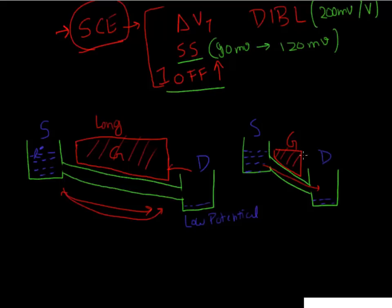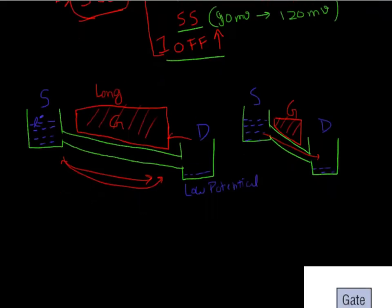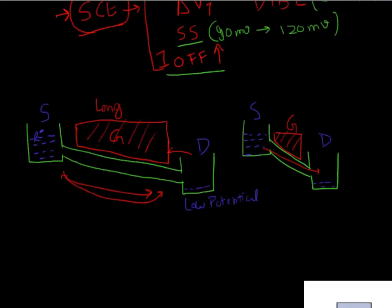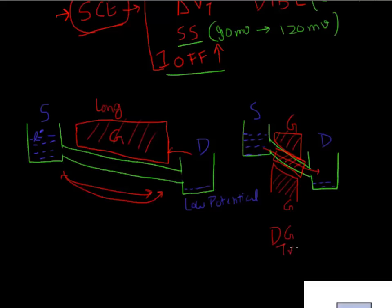Using this analogy, we can simply think about how to improve or cut off this leakage, or improve the gate control. What we need to do is essentially put another nozzle — maybe use two nozzles, or use a double gate device. Or maybe put another nozzle on the side — use a triple gate or tri-gate device. Or maybe put a nozzle all around it and use a gate all around device.